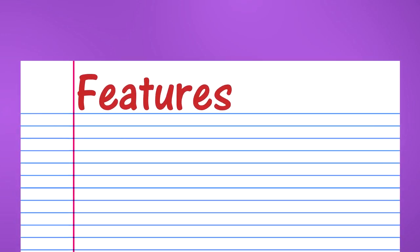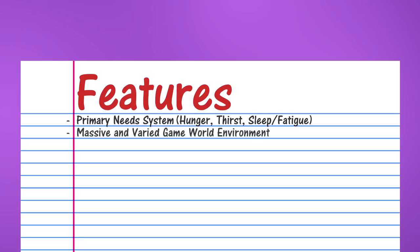To start with, I'm going to put 'Primary Needs System' — because we all love hunger, thirst, and sleep. I want to also mention that this features list probably isn't something your customers are going to see on the box or in the game's description. Most of the stuff on it I'd recommend not putting there, because it's for the express purposes of developer knowledge. Next, I'm adding 'Massive and Varied Game Mode Environment' — because it's basically a large ship, a large sandbox that the player will be able to get to virtually anywhere within the game world.